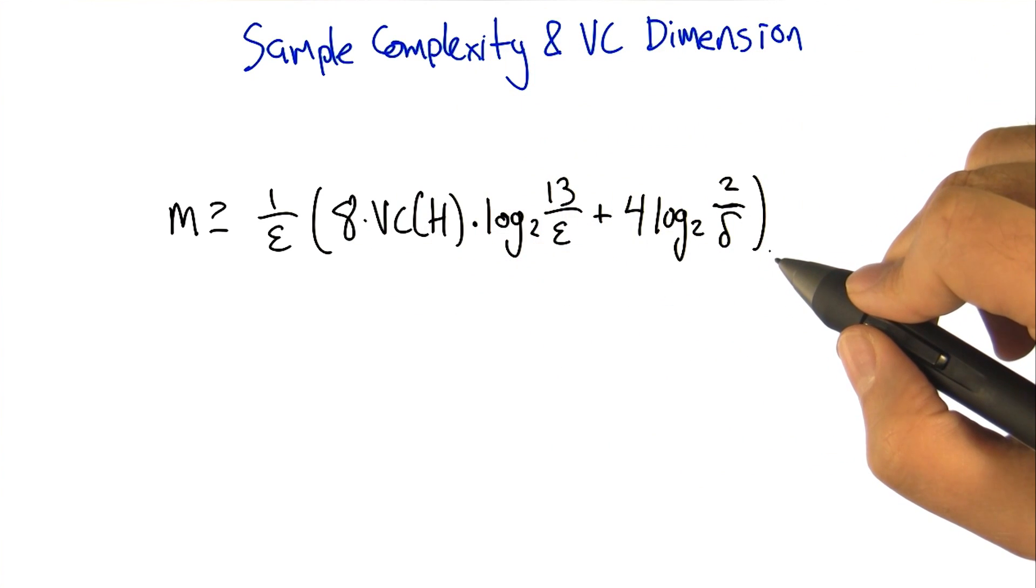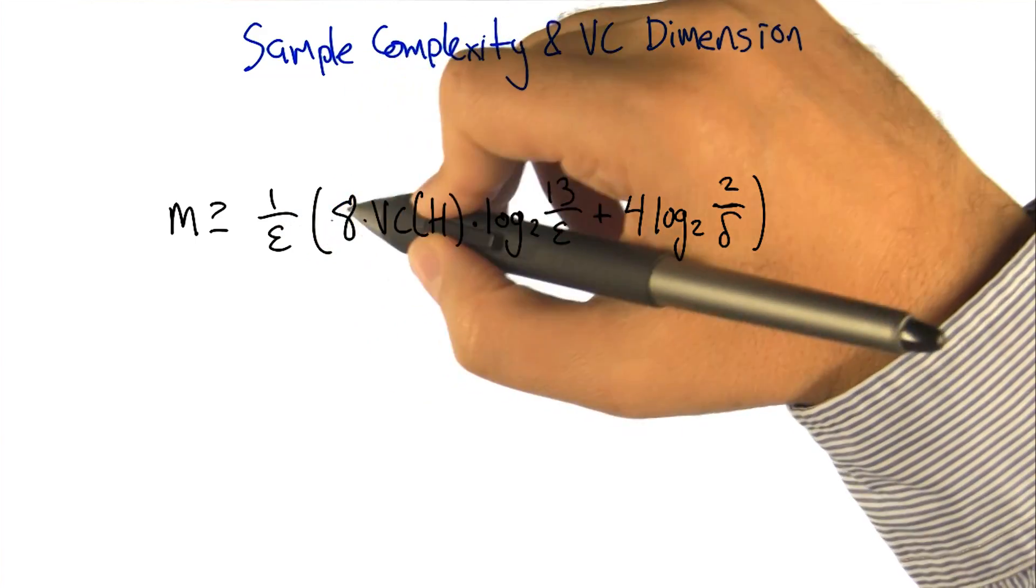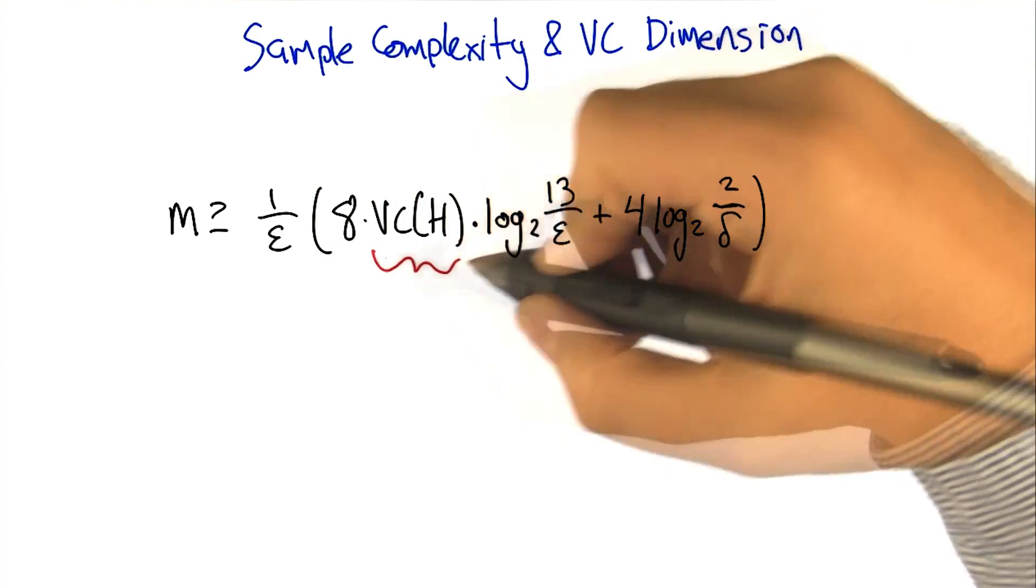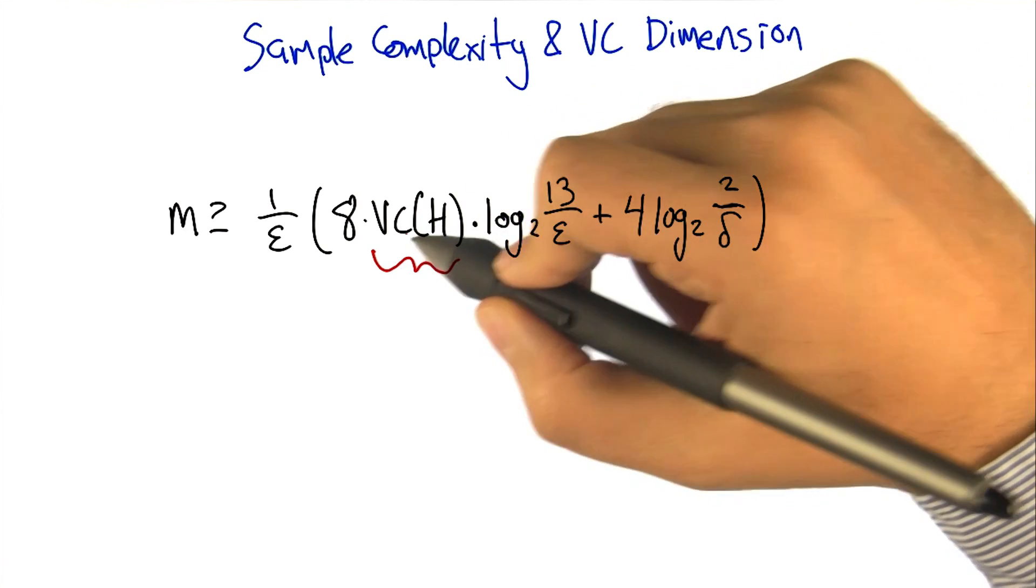The form of this looks a lot like how things looked in the finite case, but in fact it's a little bit weirder. So 1 over epsilon times quantity, 8 times the VC dimension of H. That's where this quantity is coming into play. As the VC dimension gets bigger, we're going to need more data.